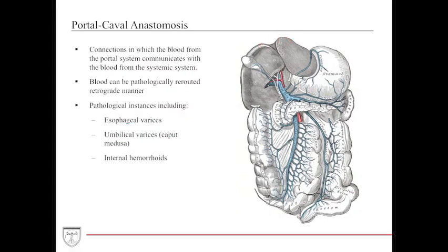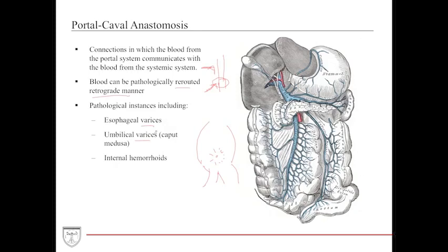There is communication between the portal and systemic systems called a portal-caval anastomosis, where the systemic (IVC-associated) system and the portal system communicate with one another. In pathologic situations, blood can be rerouted in a retrograde manner causing specific hallmark presentations. For example, at the lower esophagus, blood from the systemic system and blood draining from the portal venous system converge, forming one site of portal-caval anastomosis. The overlying skin of the abdominal cavity is another site, where dilation is called umbilical varices or caput medusae.